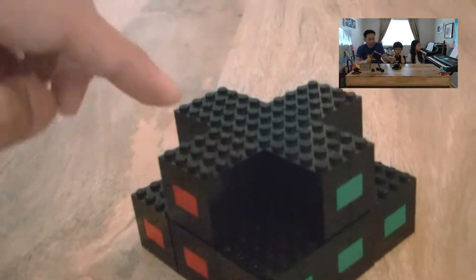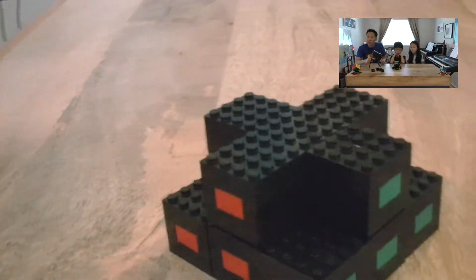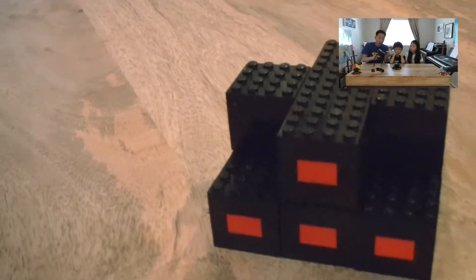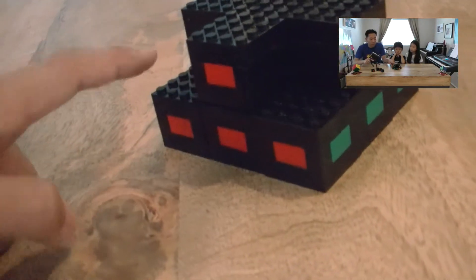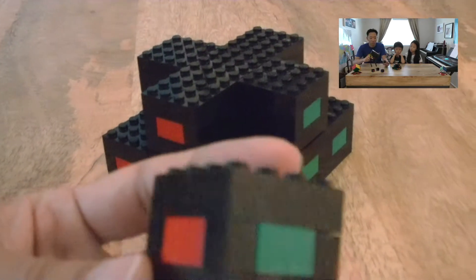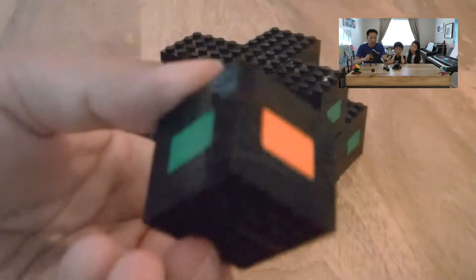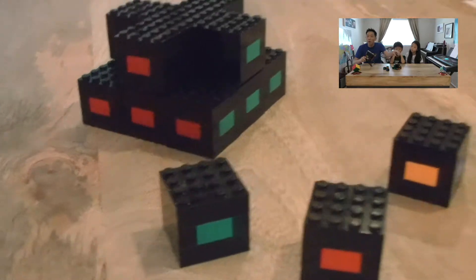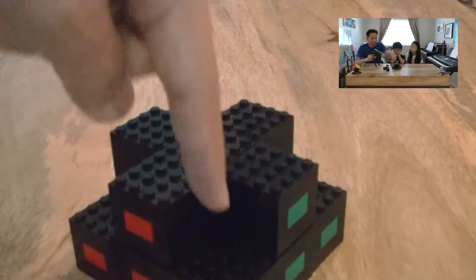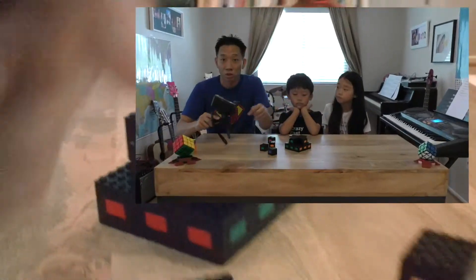The bottom layer is completely done and these center pieces, because they never move, they are in the right place. But these pieces in between, which have two colors on them, red-green and orange-blue and orange-green and blue-red, these are somewhere else around the cube and we need to get them into those slots. We're going to learn right now how we're going to do that.